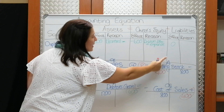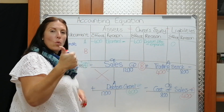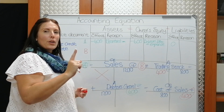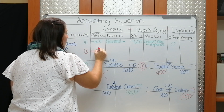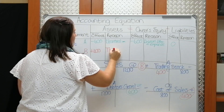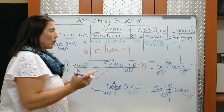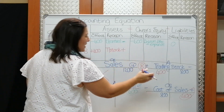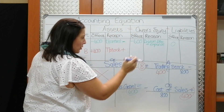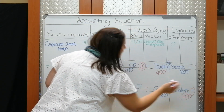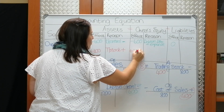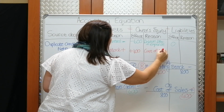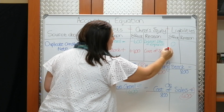Let's write the B-part in the accounting equation. Trading stock is an asset — because the client returned stock, my trading stock increased, so under assets: plus 400 Rand, reason: trading stock increased. Cost of sales is an owner's equity expense which affects owner's equity — my owner's equity increased with 400 Rand, reason: cost of sales decreased, therefore owner's equity increased.